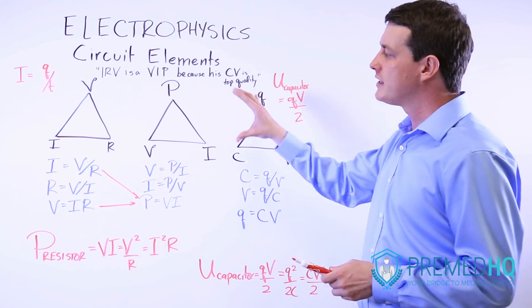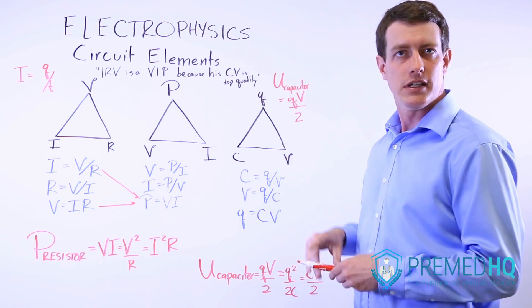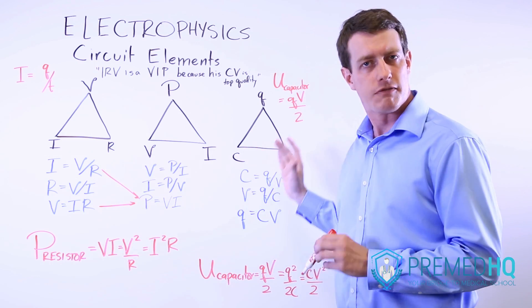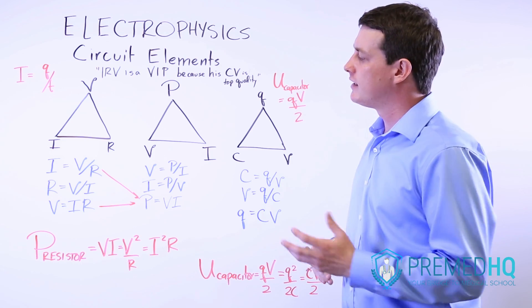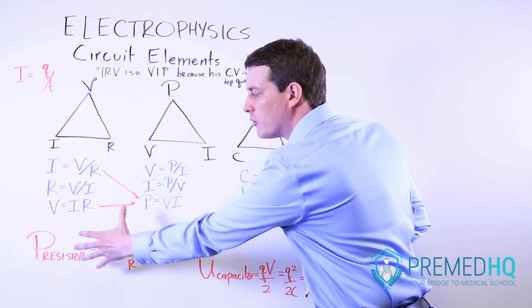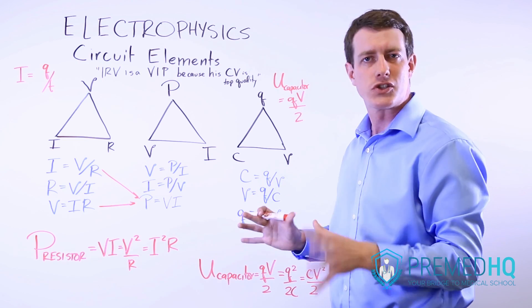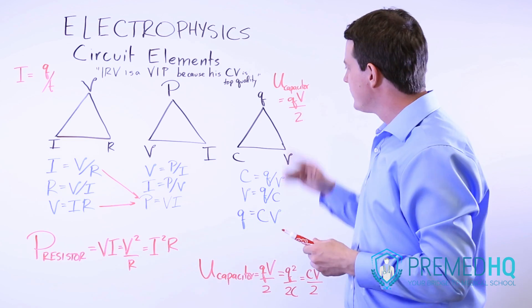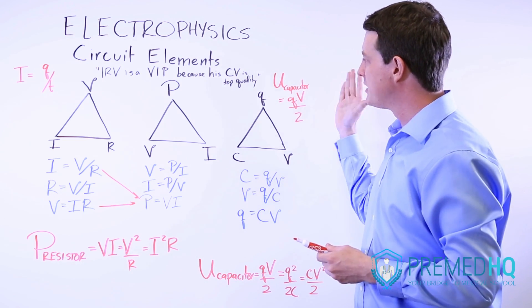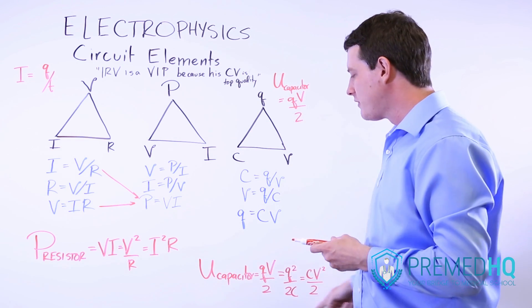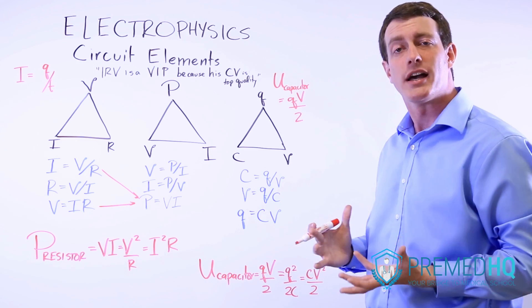So with this, Irv is a VIP because his CV is top quality, we have nine versions of these formulas here. Plus we are able to derive all the different ways that you can represent power on any resistor type of problem. And if we bring in the potential energy stored by a capacitor, then this allows us to substitute all of the ways you can calculate the energy stored by a capacitor.